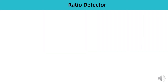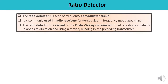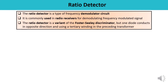The ratio detector is one form of the frequency demodulator circuit. It is commonly used in radio receivers for demodulating frequency modulated signals. The ratio detector is a variant of the Foster-Seeley discriminator. In the previous video, I discussed the phase discriminator or Foster-Seeley discriminator, and this ratio detector is a variant of that. You will be able to understand the difference while drawing the diagram.